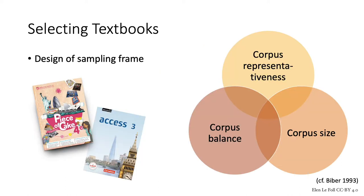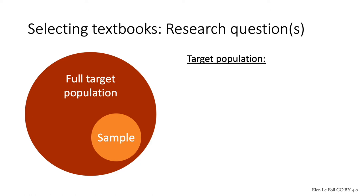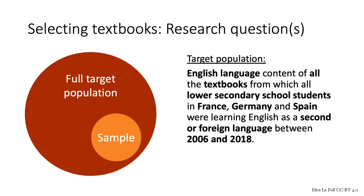Let's now turn to the process of compiling a textbook corpus. It begins with a selection of the materials to be included in the corpus — a process that's driven by the research questions, because those will determine the design of the sampling frame. No matter how large, corpora nearly always represent only a sample of a target population. The first step is to define that target population. For my textbook English corpus, I've decided that the target population is the English language content of all the textbooks from which all lower secondary school students in France, Germany and Spain were learning English as a second or foreign language between 2006 and 2018.